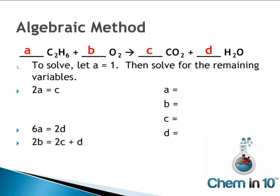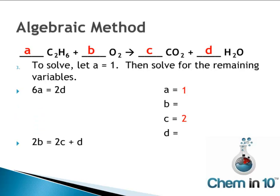The quickest way to solve these is to let A equal 1, then solve for the remaining variables. Plugging A equals 1 into the first equation, 2 times 1 equals C, so C equals 2. We also know that 6A equals 2D; substituting 1 for A gives 6 equals 2D, so D equals 3.